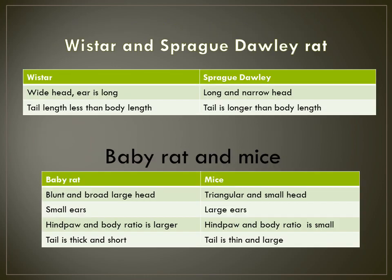What are the differences between Wistar rat and Sprague-Dawley rat? Wistar rat has a wide head, whereas Sprague-Dawley has a long and narrow head. Wistar rat tail length is less than the body length, whereas Sprague-Dawley rat tail is longer than the body length.